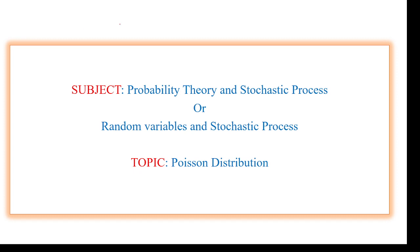The conditions are: the experiment should have only two outcomes, the number of experiment trials are infinitely large, and the success rate is also very less. In that case, we use Poisson distribution to calculate the probability.